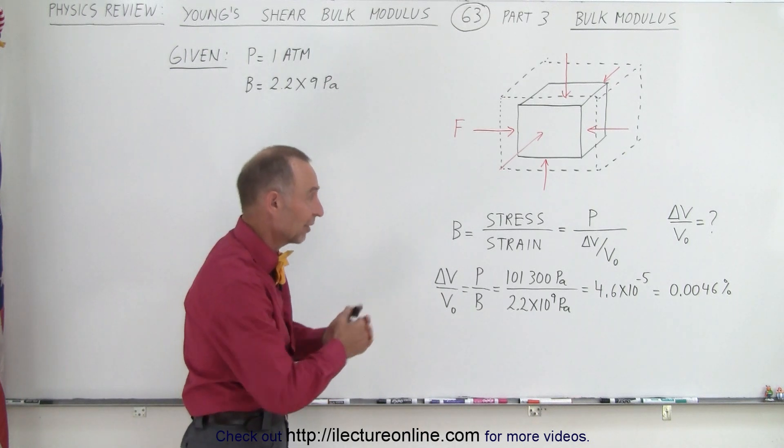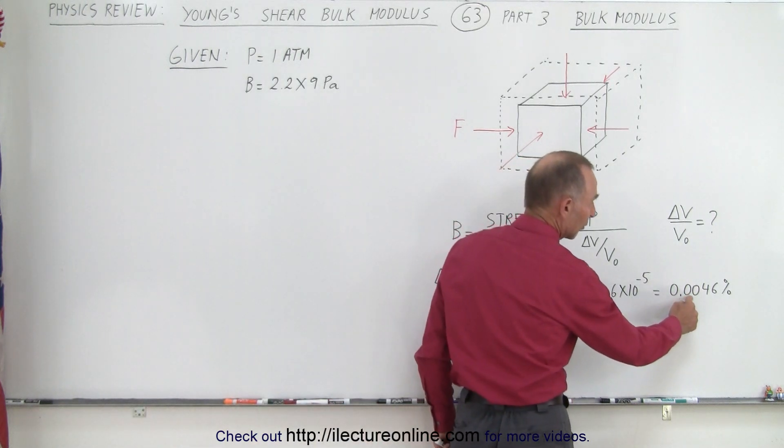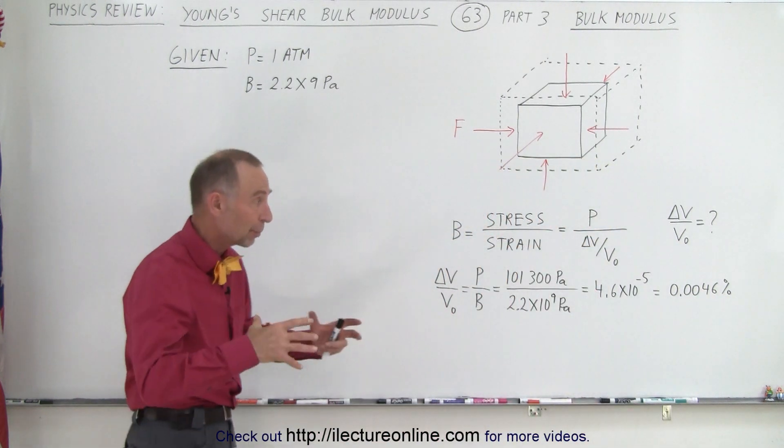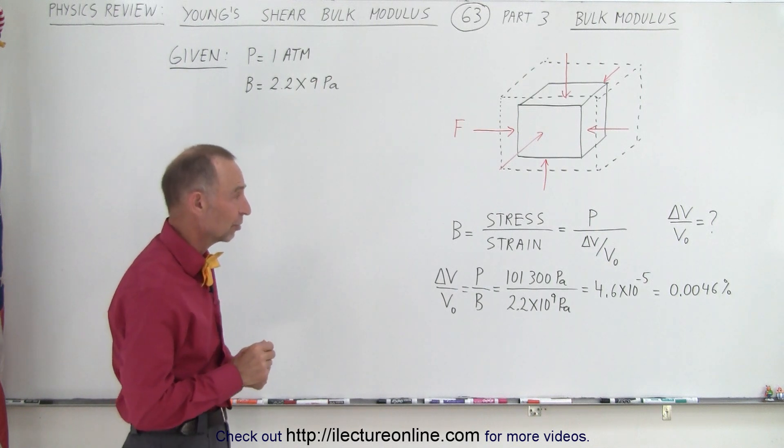Let's say you have 10 atmospheres, it then would be 0.046%. 100 atmospheres would be almost a half a percent. So it would require quite a bit of pressure to see any small appreciable change in the fractional volume.